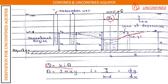As derived from Darcy's law, q = k × i × a. The area in radial coordinates is 2πxy, considering both x and y directions. The hydraulic gradient i is dy/dx, where y is height and x is the radial distance. So area A = 2πxy and i = dy/dx.